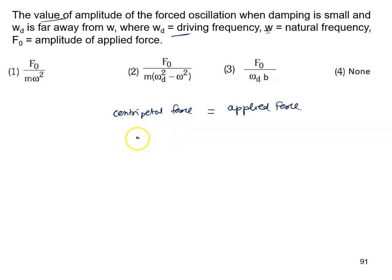Centripetal force, we know, is m omega^2 a. We take omega as omega_net, and the applied force amplitude is given as F0. F0 is the amplitude of the applied force.